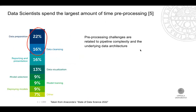This is not a problem only of Trace. In general, data scientists tend to spend the largest amount of time on preprocessing. These preprocessing challenges are related to pipeline complexity and the underlying data architecture. A data pipeline is understood as a series of data processing steps that are connected and managed.